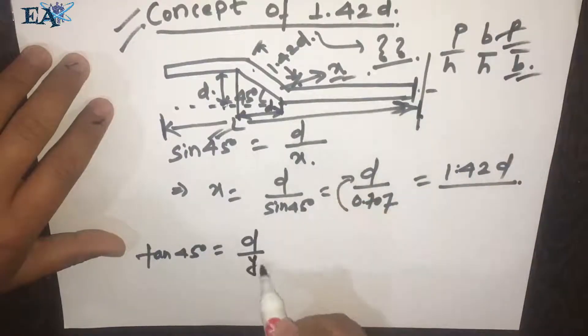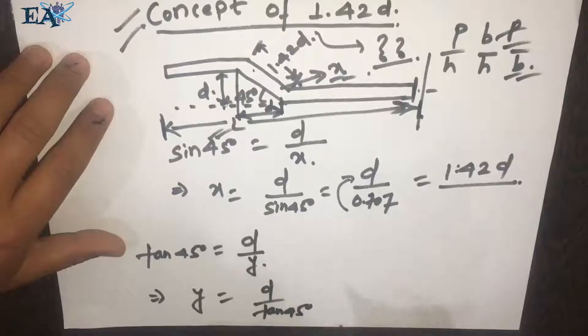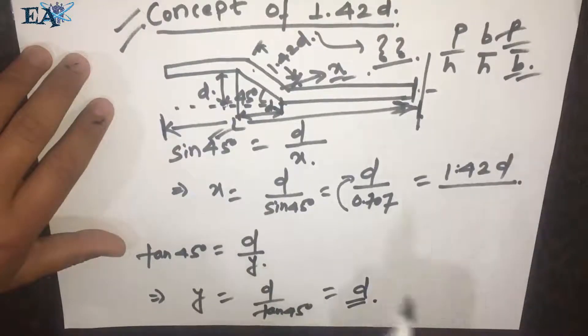Y is D by tan 45. Everyone knows that tan 45 is 1, so Y is equal to D. The length covered by this crank is D.